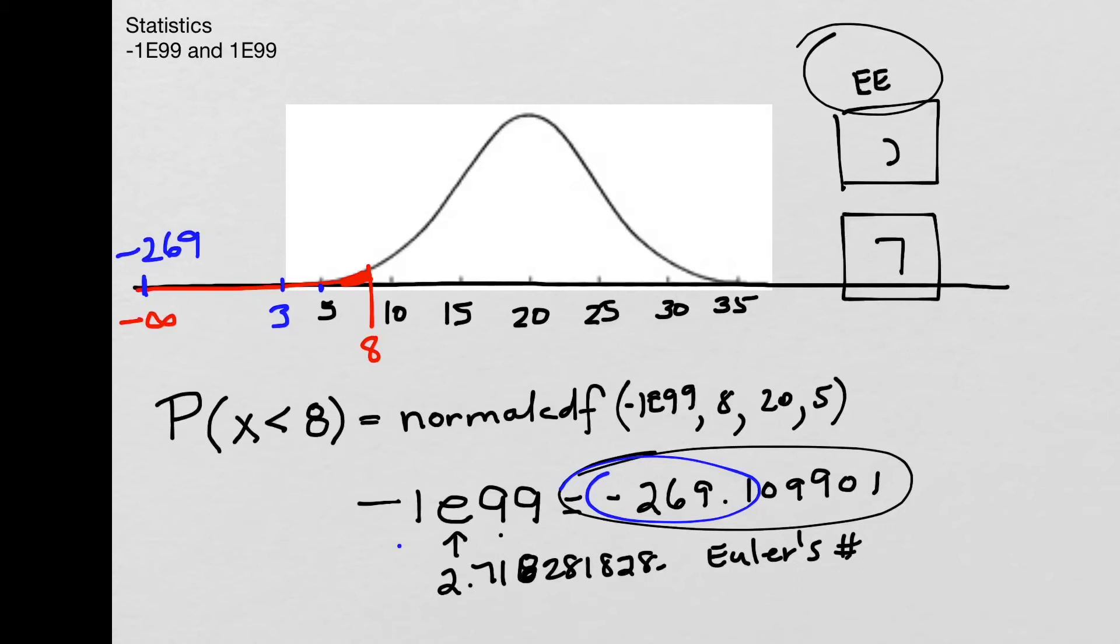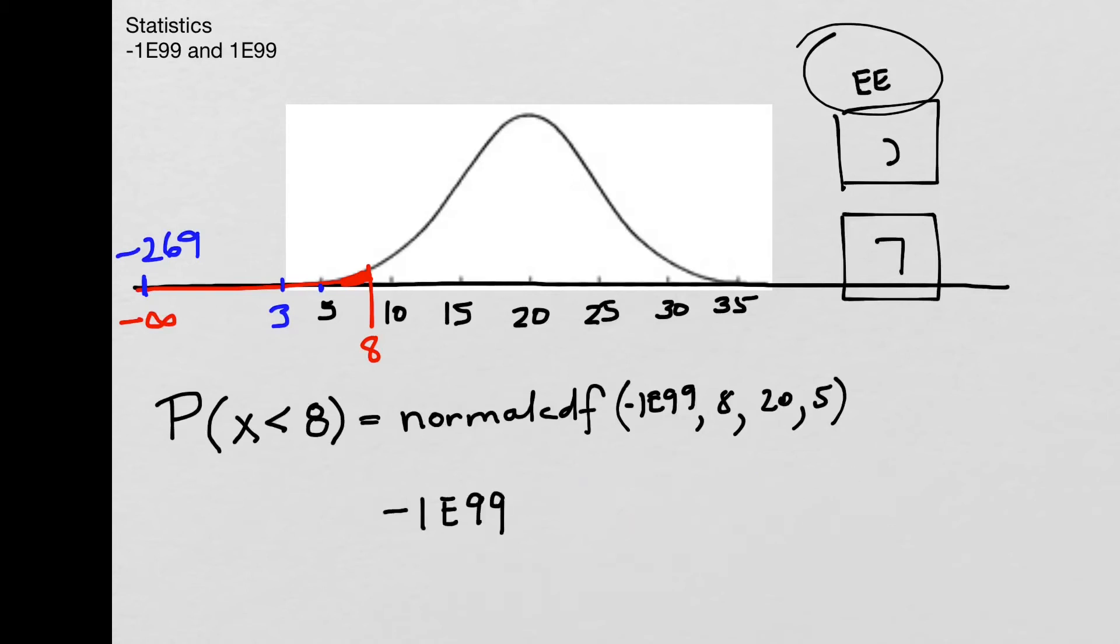And another thing that people will enter is they'll type in negative 1, E99. Looks totally fine here. This E is actually a very large E, whereas normally when you type it, it comes out looking like this, where it's a smaller E than the numbers around it.